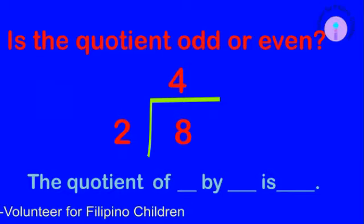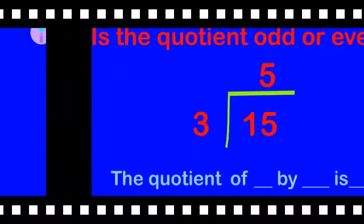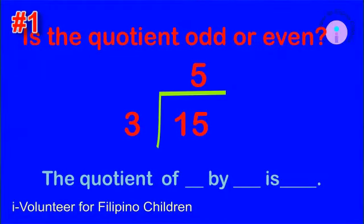Now, are you ready to answer the quiz? Item number one: is the quotient odd or even? The quotient of fifteen by three is odd.